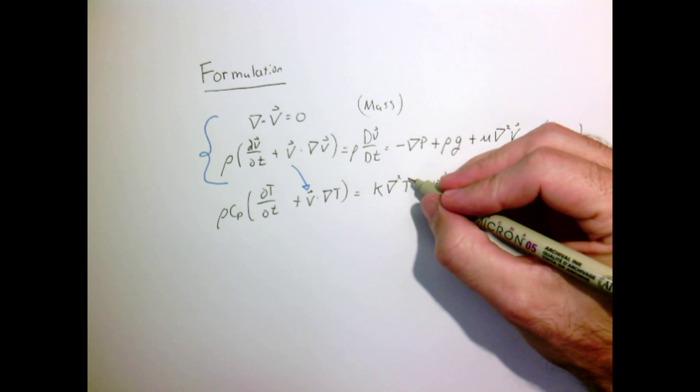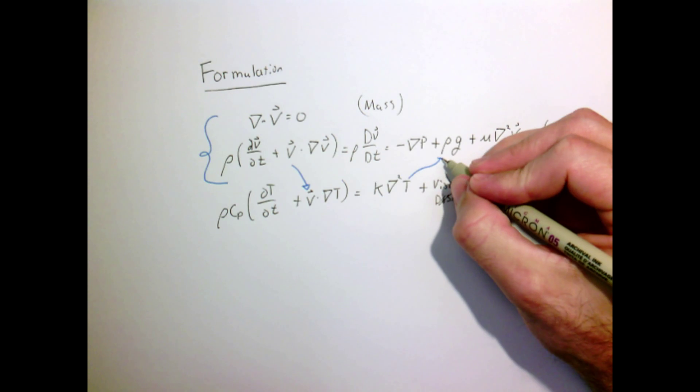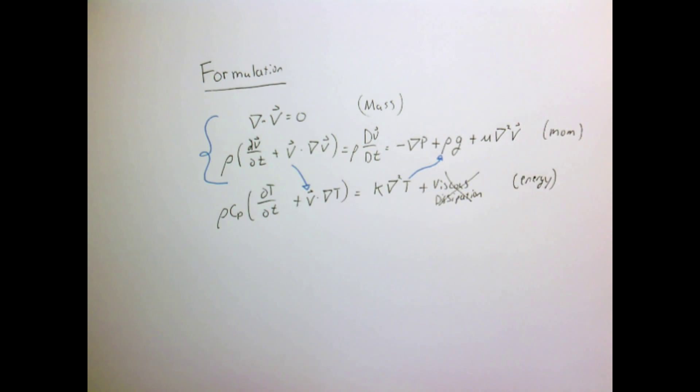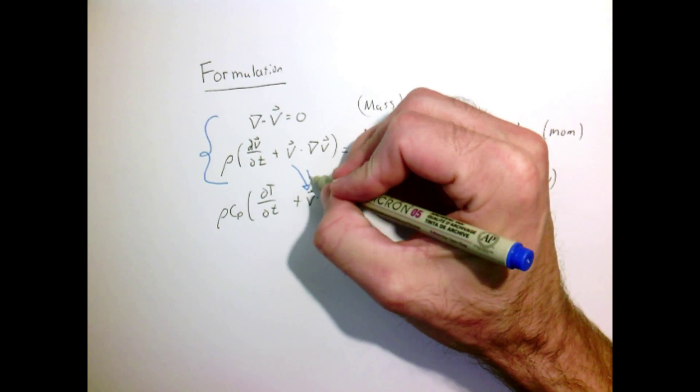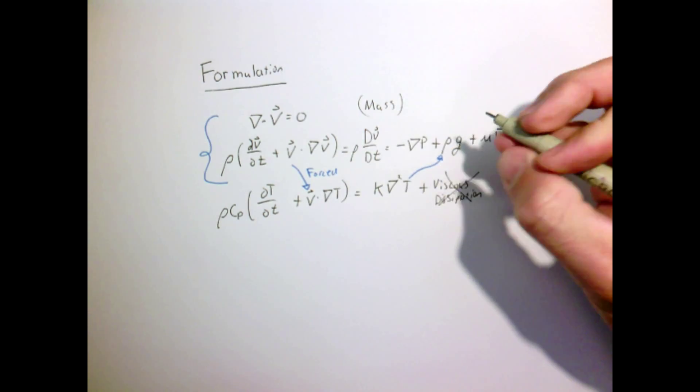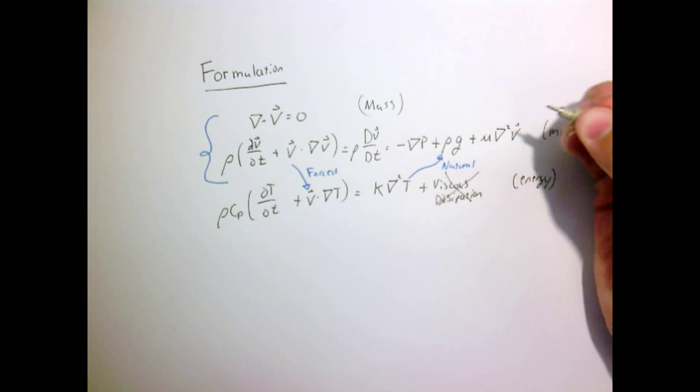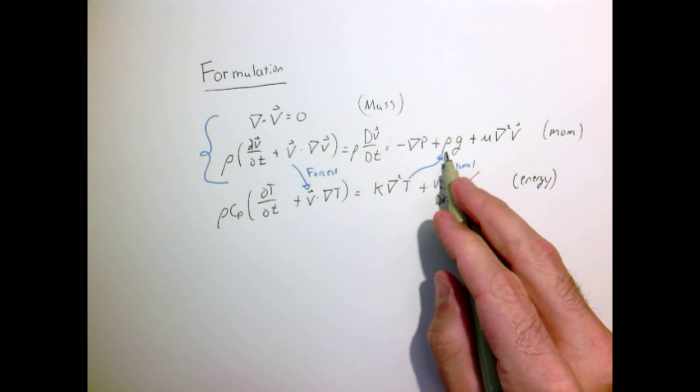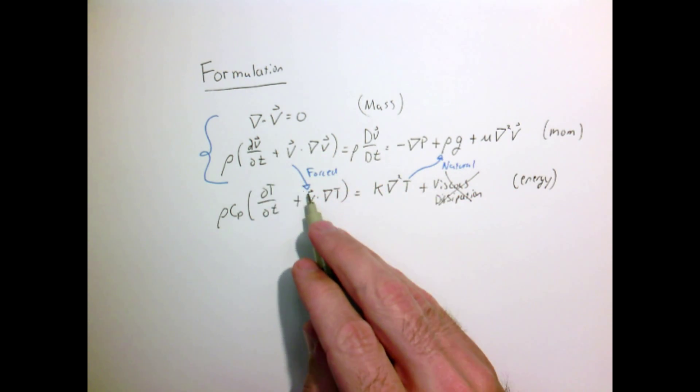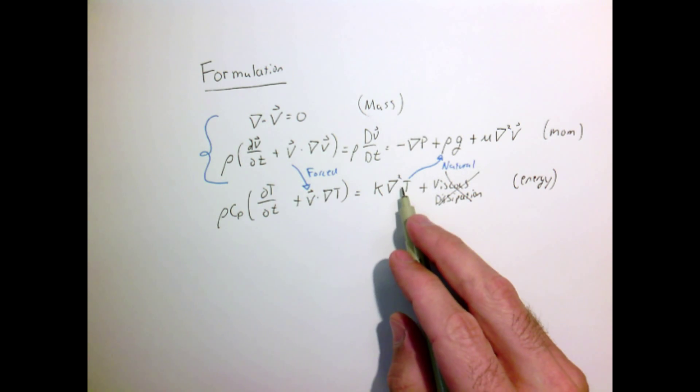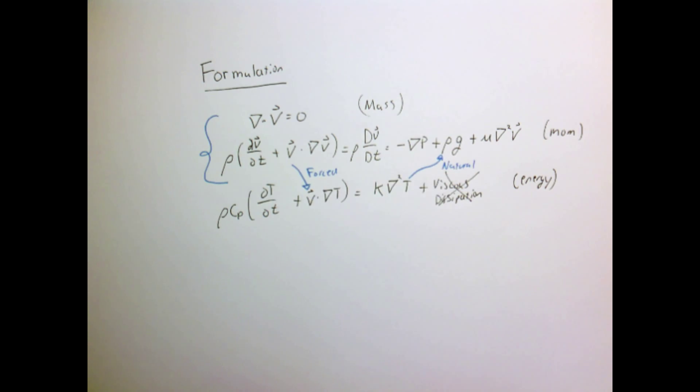But we didn't really consider the back coupling, which we are going to now. The coupling comes in the gravitational term. If the fluid heats up and gets hot, that affects the fluid's density. It's those density differences being acted upon by gravity that cause the fluid motion. In forced convection, we have a one-way coupling. In natural convection, we have a two-way coupling. The density difference drives the flow, the flow drives the temperature field, the temperature field drives the density difference.